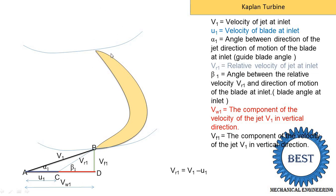Now we draw the outlet velocity triangle. Kaplan turbine is an axial flow turbine, meaning water coming out is in the axial direction. So the outlet angle alpha2 is 90 degrees — the water exits as a vertical line. Since alpha2 equals 90 degrees, the V2 line is vertical and cannot be divided into a horizontal part. This means the horizontal component Vw2 equals zero. Therefore, V2 equals Vf2, and Vw2 equals zero.